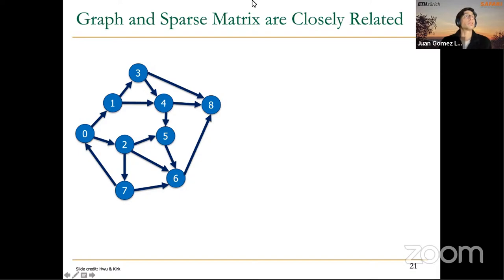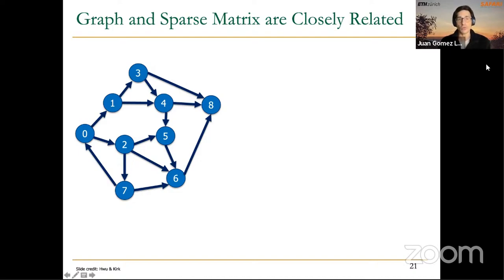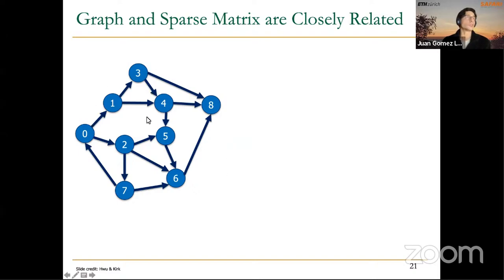Let's use a simple graph as our running example. This graph has nine nodes total. Notice that the edges connecting the nodes are directed — they are arrows — so they go from one node to another, meaning each edge is not bidirectional.